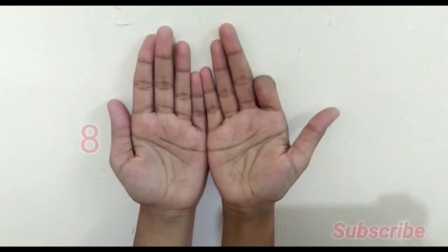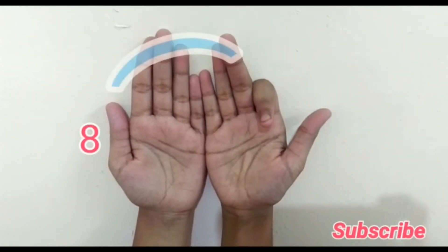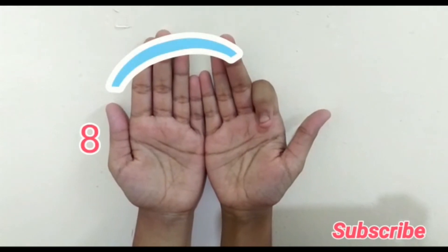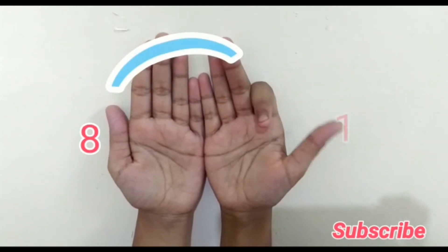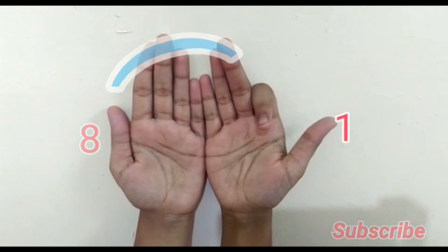9 into 9. So fold your ninth finger. Towards the left side of the folded finger it's 8 and towards the right side it's 1. So 9 times 9 are 81.